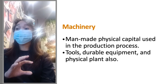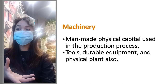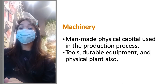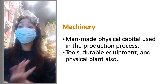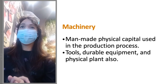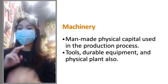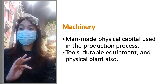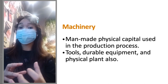Machinery refers to man-made physical capabilities in the production process — the tools, equipment, and physical plants needed to carry out production. For example, pans and cooking tools used in food production are considered machinery. The key difference between materials and machinery is that machinery are fixed assets, while materials are variable assets.